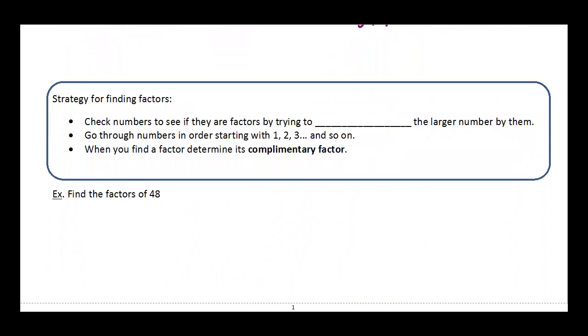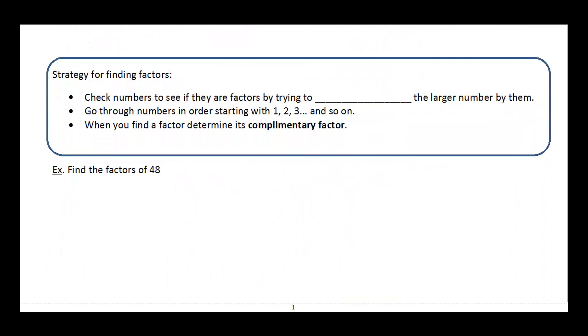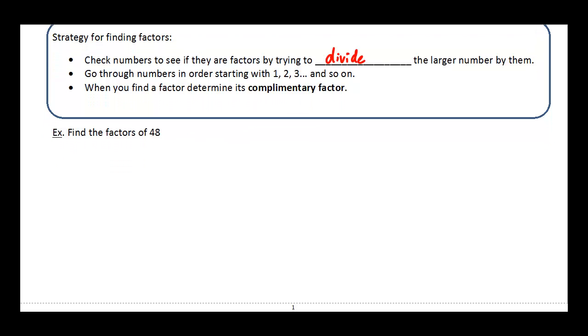Okay, so our strategy for finding factors is pretty straightforward. Basically, we're going to check to see if a number is a factor by trying to divide it into the larger number. So to find out if a smaller number is a factor of a larger number, we try and divide it in. We can just go sequentially through the numbers, start with one, two, three, work our way up. And one little hint there is once we find that one of the numbers is a factor, we want to turn around and find its complementary factor. And I'll show you what I mean by that in just a second.